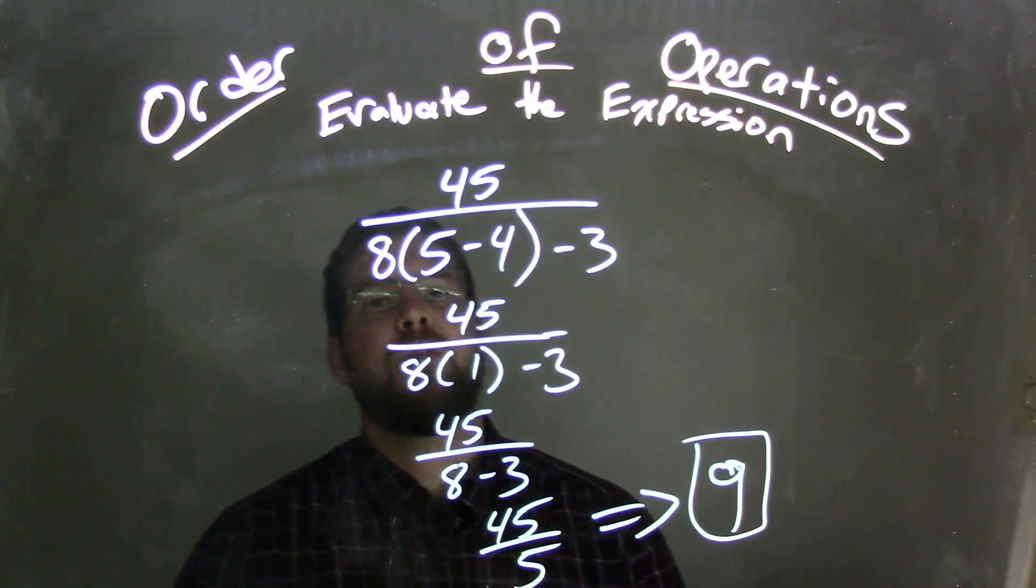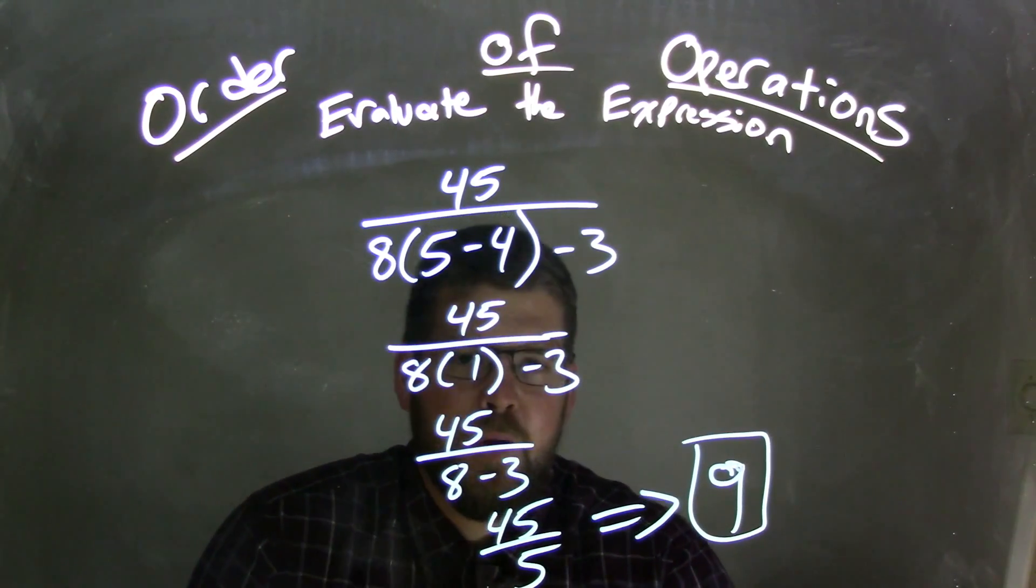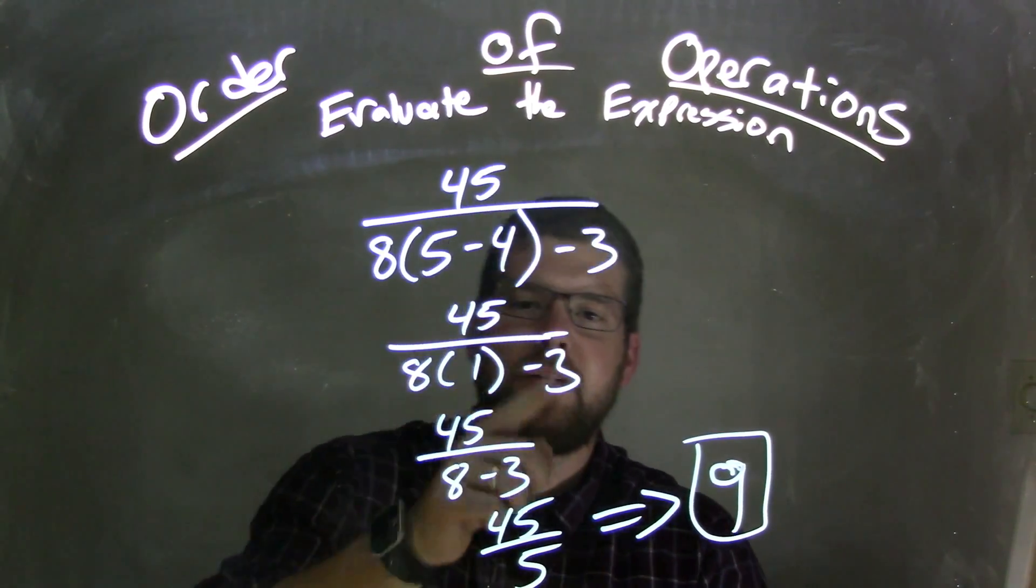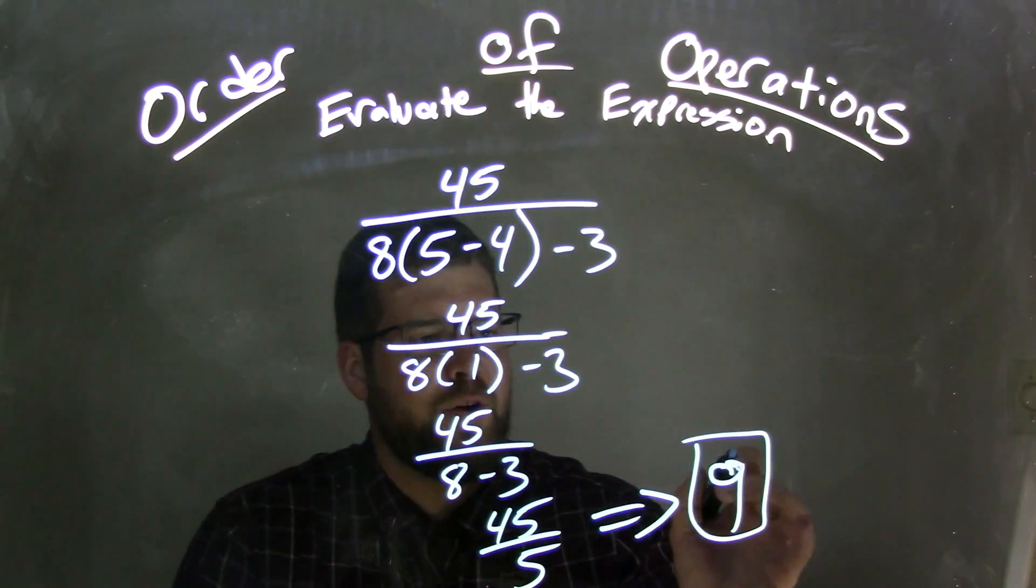So we start with 45 over 8 times the parentheses 5 minus 4, minus 3. 5 minus 4 has to be dealt with first, which is that 1. 8 times 1 is 1. 8 minus 3 is 5, right? And 45 divided by 5 is good old 9 here.